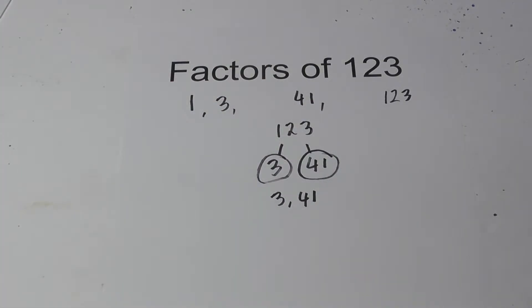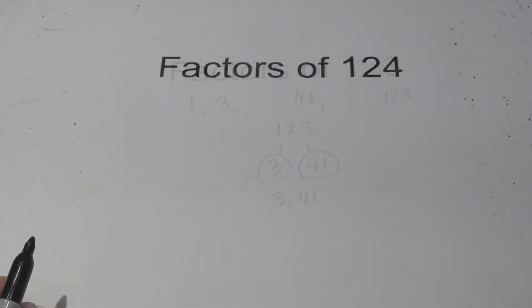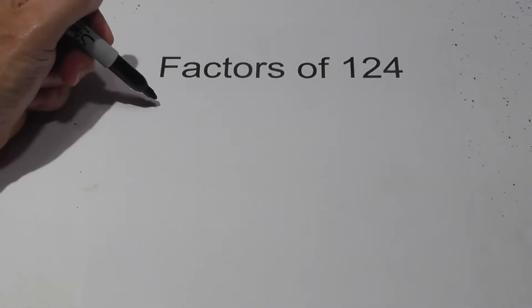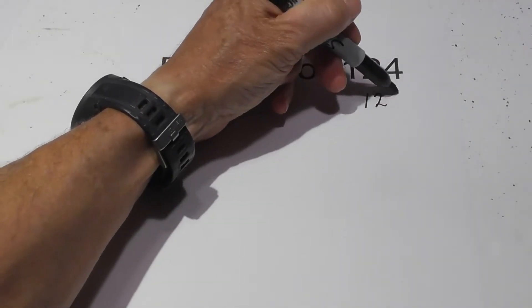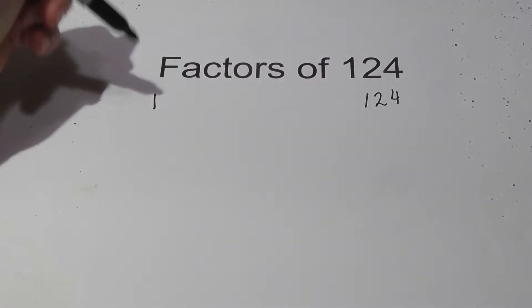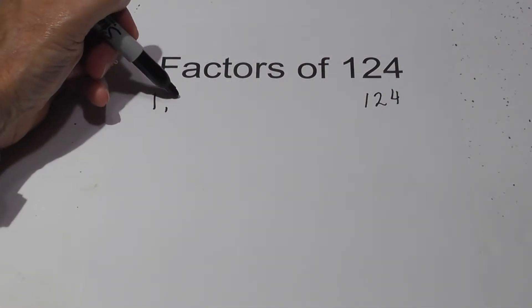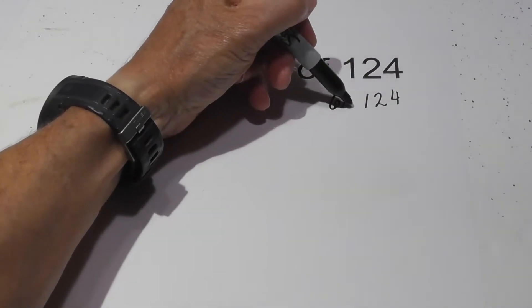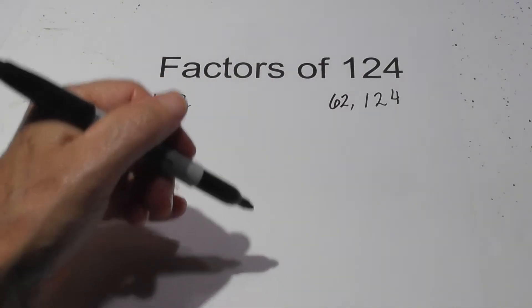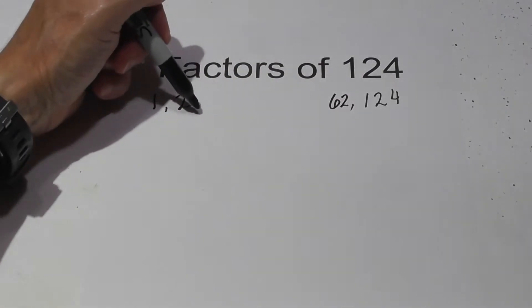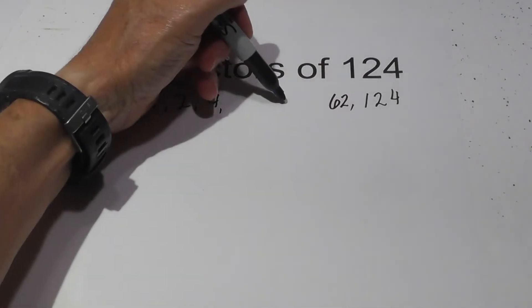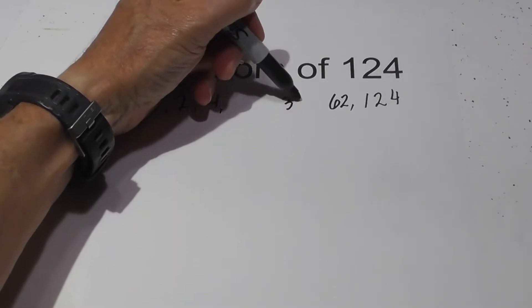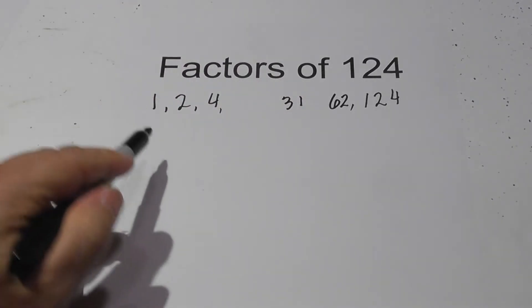Now let's look at the factors of 124. Let's begin with 1 times 124, then we can go 2 times 62, and then 4 times 31. So those are the factors.